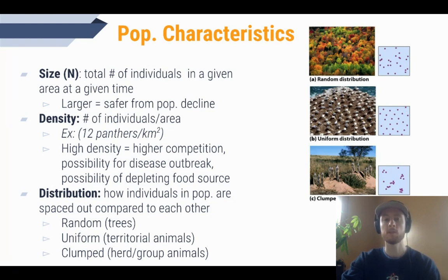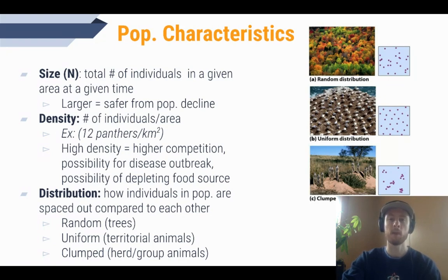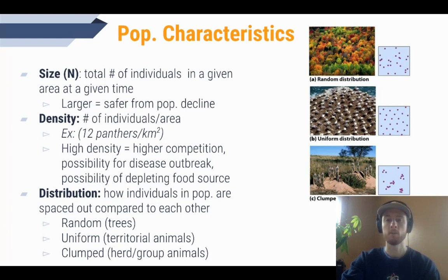Distribution is how organisms are spread out in a population relative to one another. Random distribution is typical for plants like trees, whose seeds are dispersed randomly by wind or animals, though some plants secrete defensive chemicals into the soil that kill nearby plants, leading to a more uniform distribution. Uniform distribution is also typical of nesting or predatory animals that defend a central den or nest area. Shorebirds are another great example. Clumped distribution is typical of animals that live in herds or groups, like meerkats.